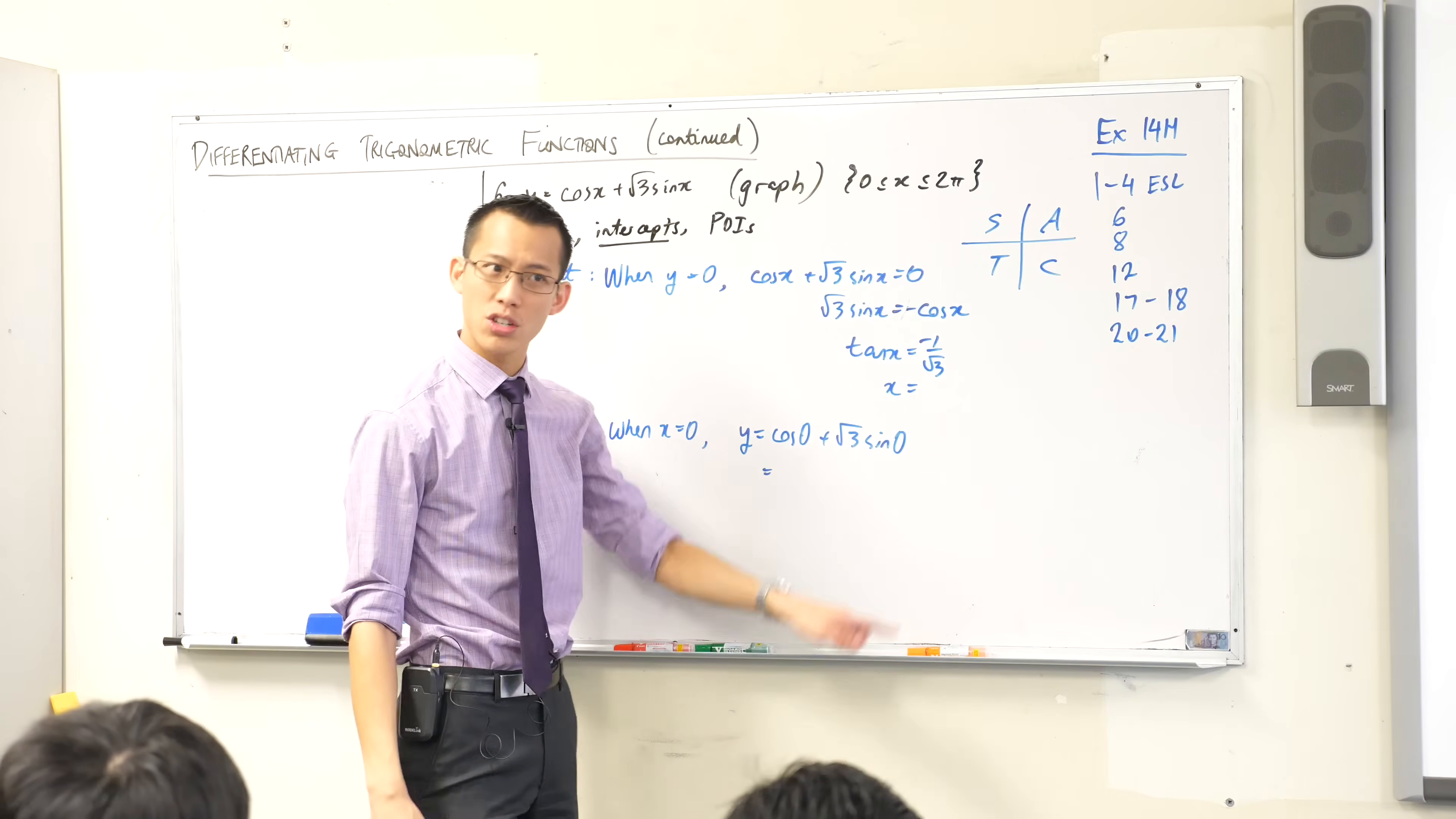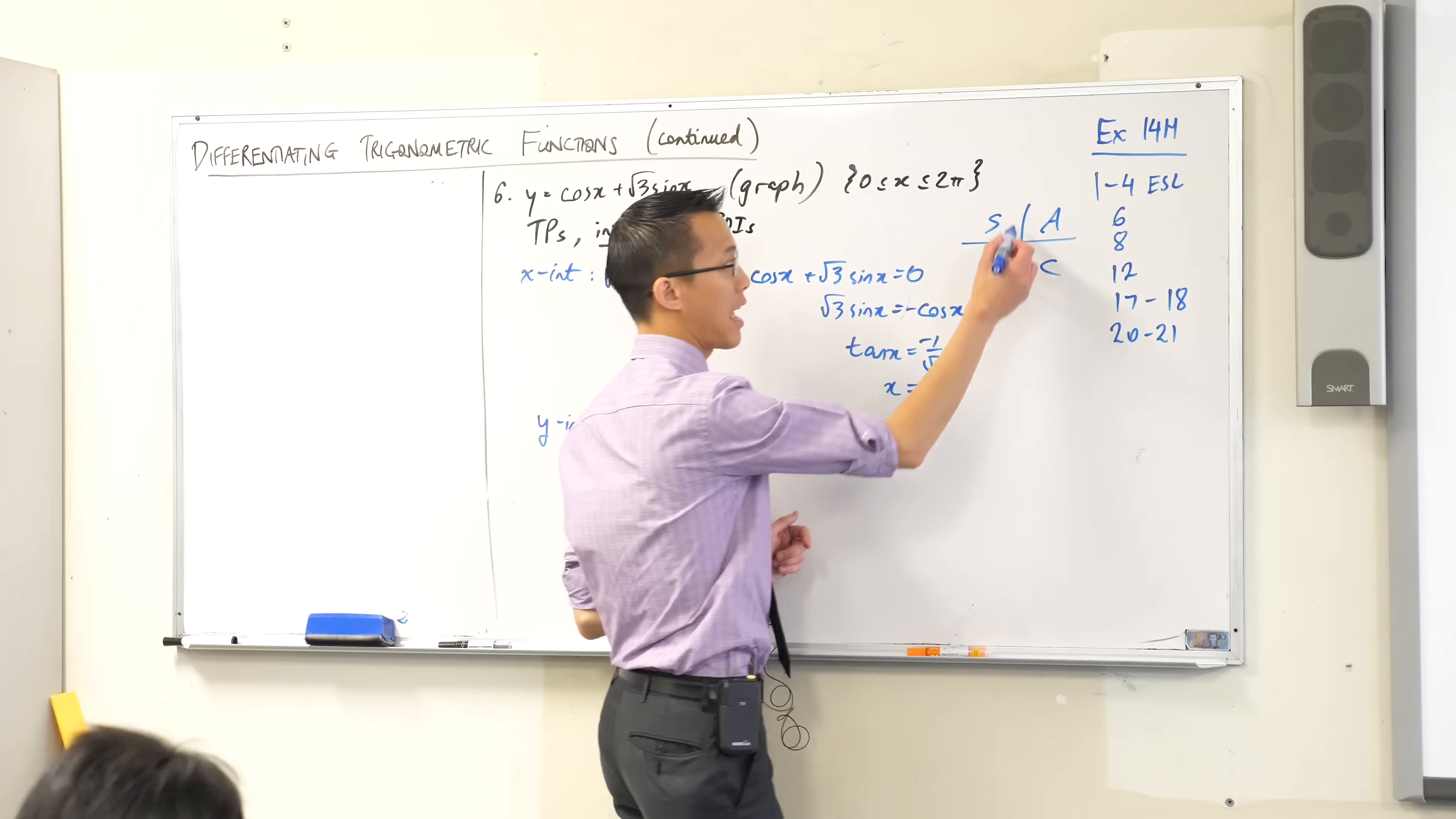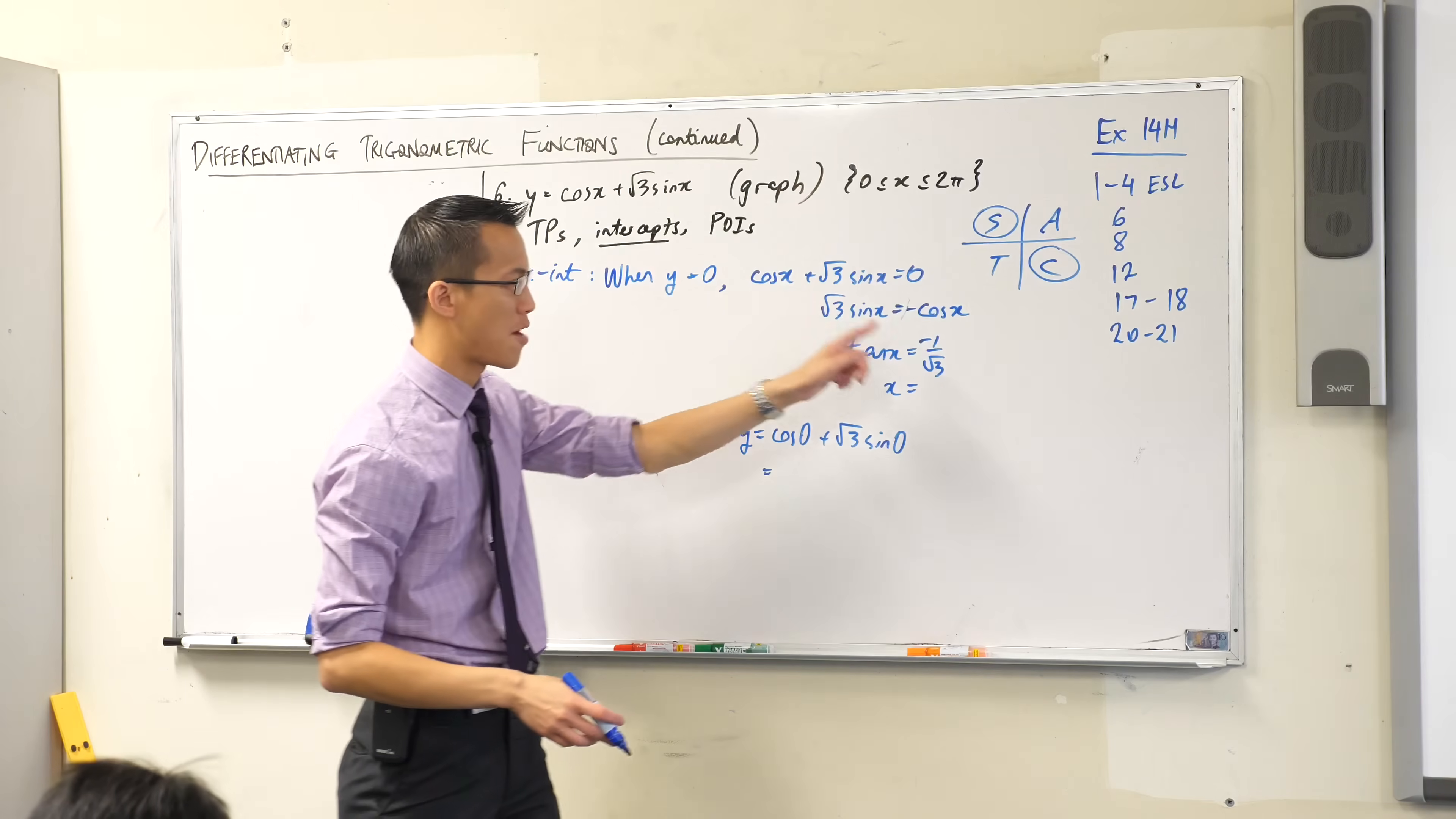Tan is negative. So which quadrants am I in? 2nd and 4th. These guys. So now that I've got the quadrants out of the way, I can not worry about the sign. The sign just tells me about the quadrants.